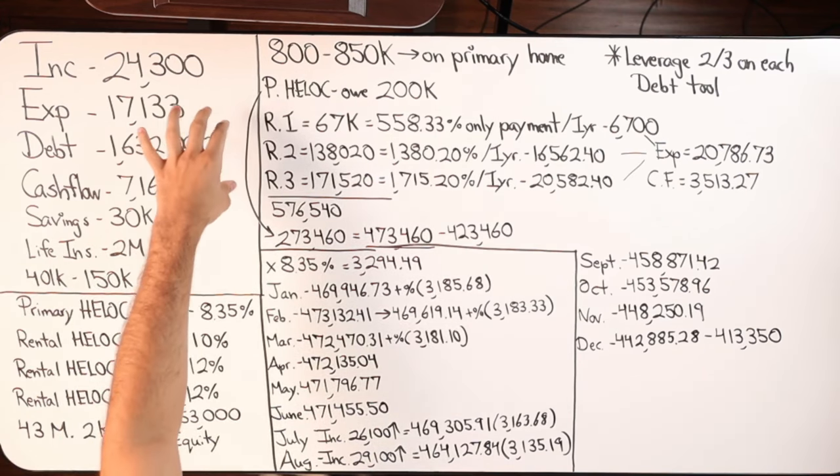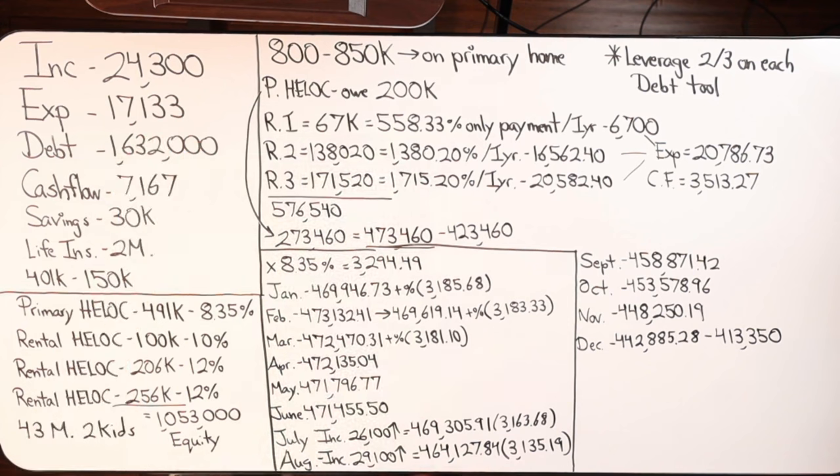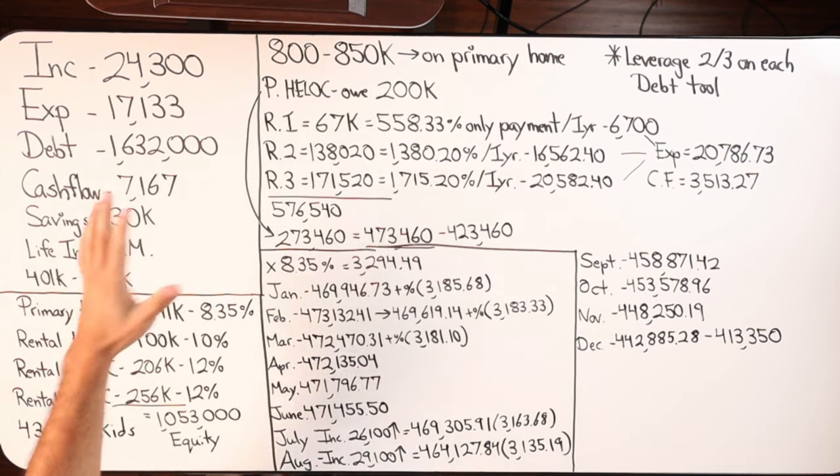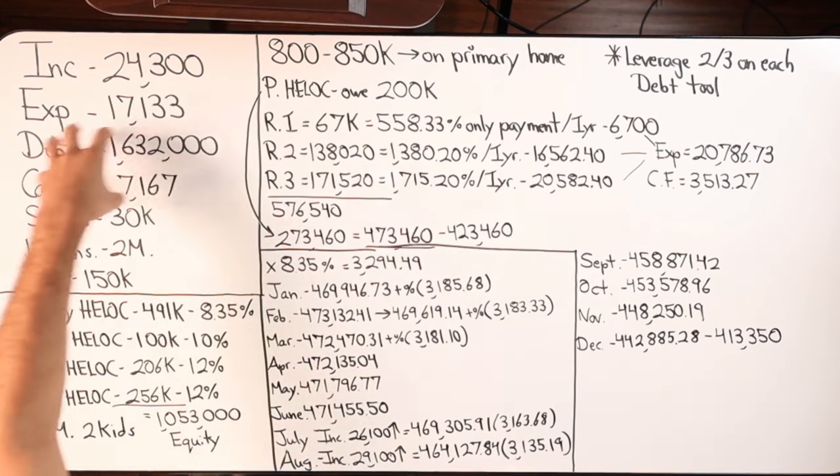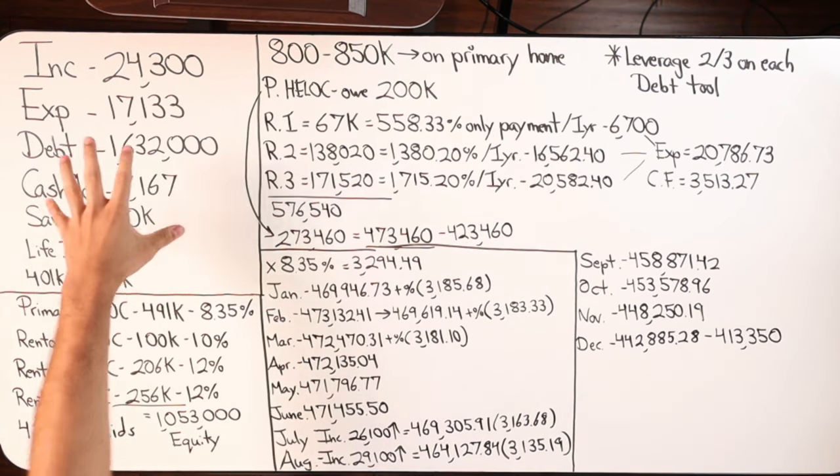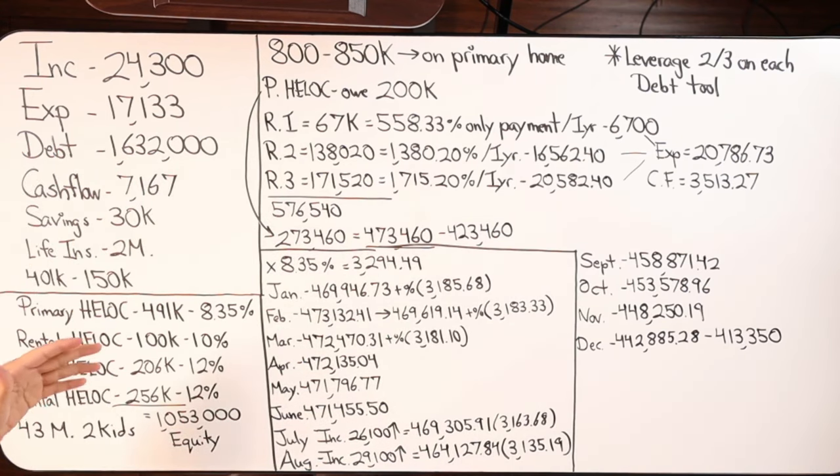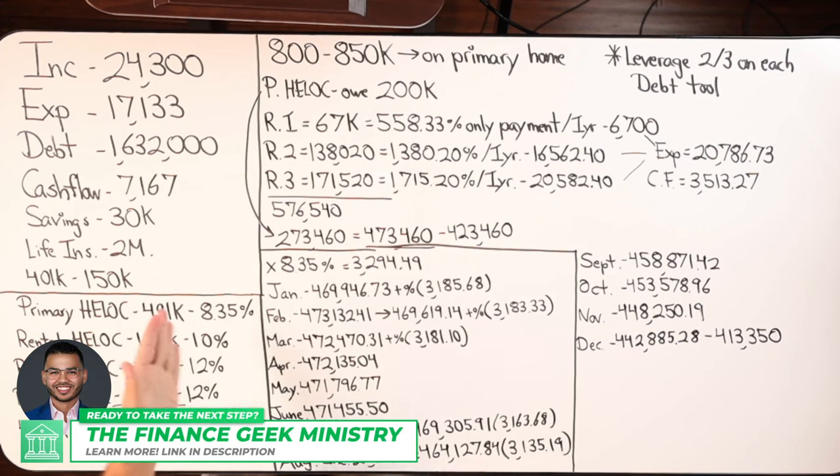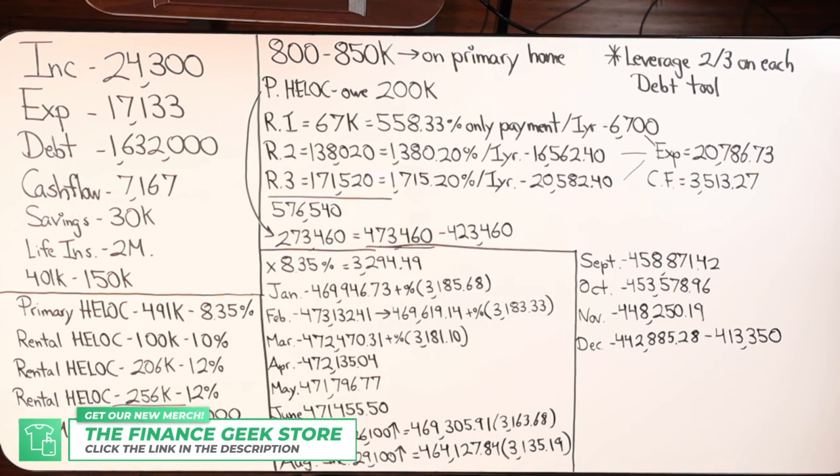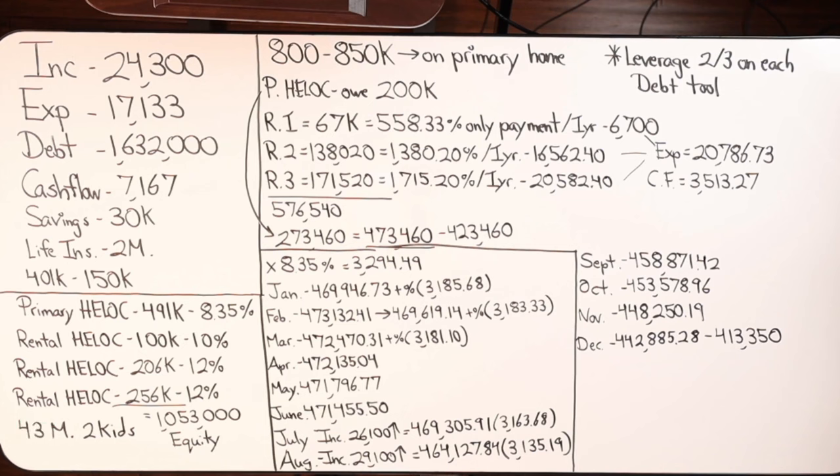Now all of the debt, the 1.6 million, is mortgages. This person has four properties total - three of them are rentals, one is primary. In addition to the 1.6 million of mortgage debt across four different mortgages, he also has four HELOCs. We have a primary HELOC in the second position on the primary home for $491,000 at 8.35% interest rate. All of these are variable interest rates.